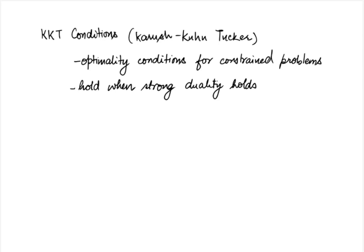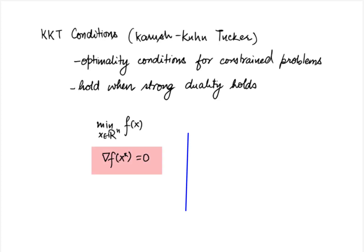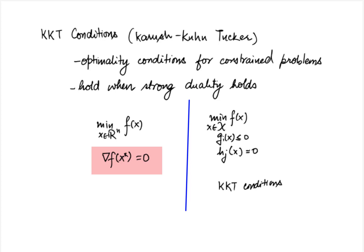You may recall that in the first video, we showed using first-order conditions for optimality that for an unconstrained problem, min over x of f, if a point satisfies gradient of f equal to zero, then it is optimal. More generally, if you have a constrained problem of the form min of f over x in calligraphic X, g_i of x less than or equal to 0, h_j of x equal to 0, and you know that strong duality holds, then the corresponding optimality condition is the KKT condition.